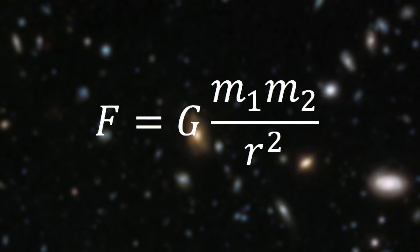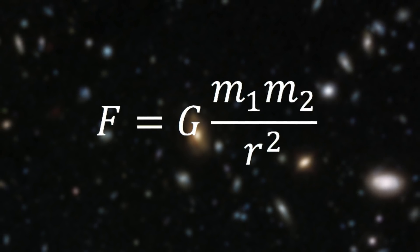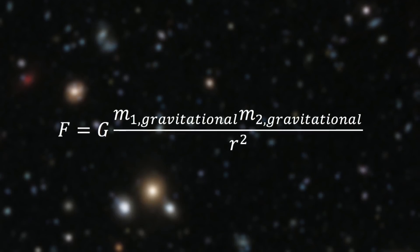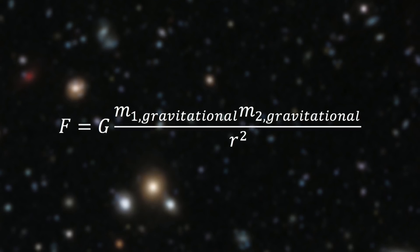where G is just a constant and R is the distance between the two objects. But because we're being careful about types of mass, we must call this kind of mass gravitational mass and we would then write the equation with the subscripts like we see here.